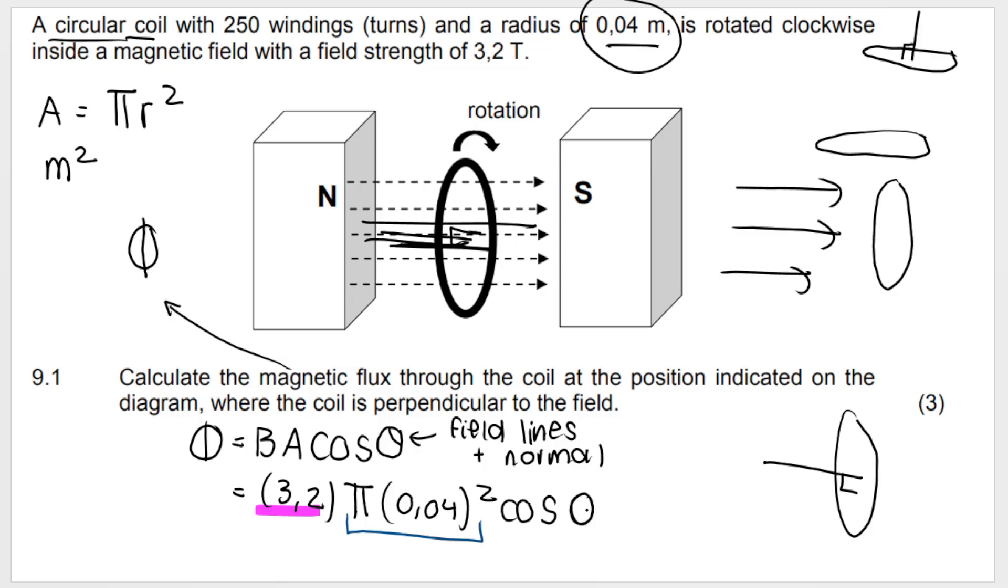All the field lines are traveling straight through the coil, so the angle is zero. Type that whole thing into your calculator: 3.2 × π × 0.04² × cos 0, and you should get 0.016 Weber (Wb). The full answer is 0.01608495. We can round to two decimal places if we want. You get marks for formula, correct substitution, and answer with units.